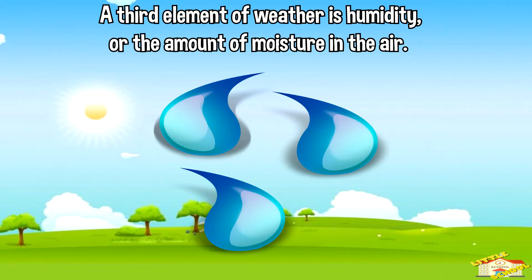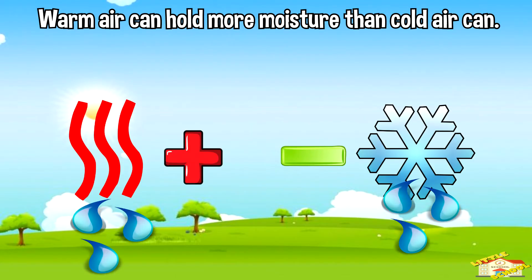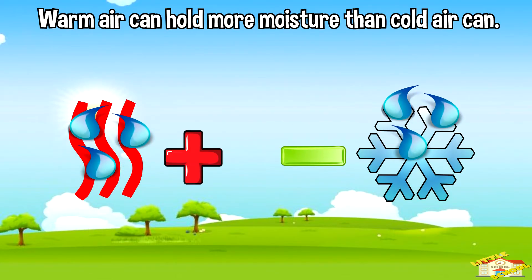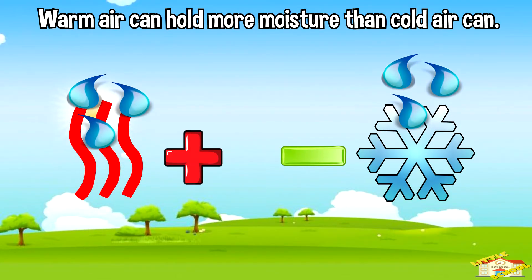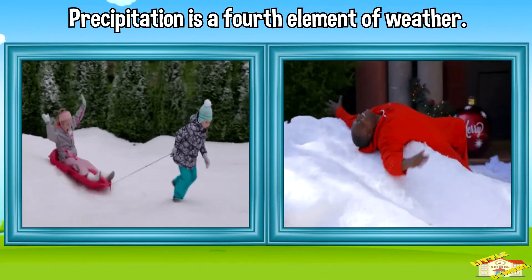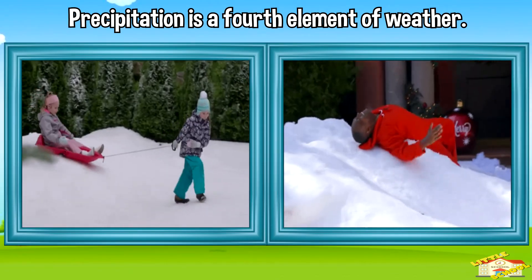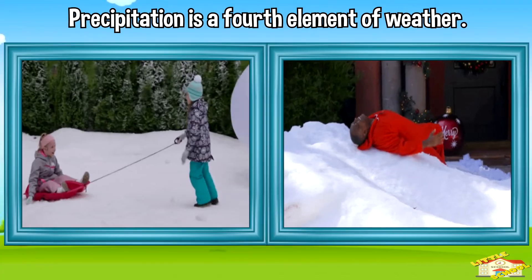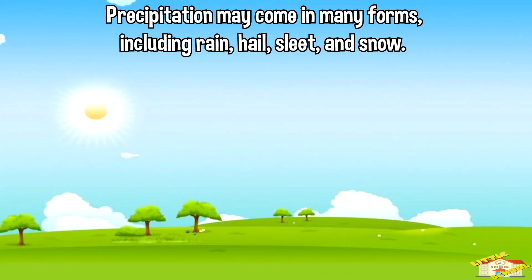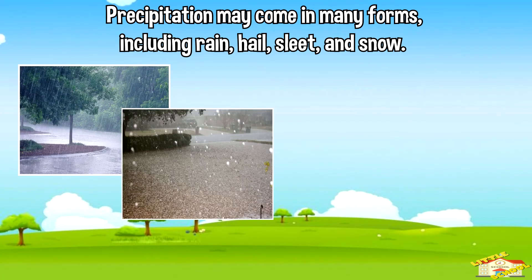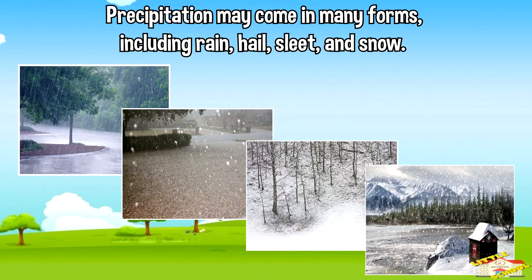A third element of weather is humidity, or the amount of moisture in the air. Warm air can hold more moisture than cold air can. Precipitation is a fourth element of weather. Precipitation may come in many forms, including rain, hail, sleet, and snow.